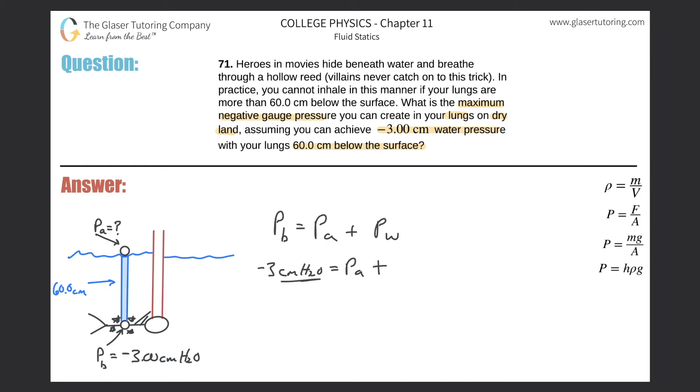See, they gave you the units here of centimeters of water, and they also told you the height of a column of water above the individual's lungs. So this will be then 60 centimeters of H2O of pressure that the water is exerting on the lungs at the bottom.